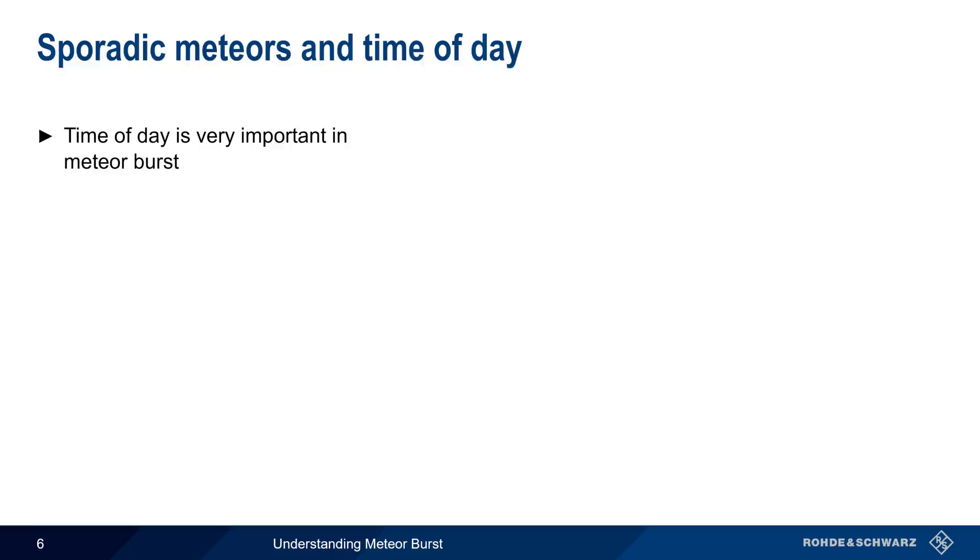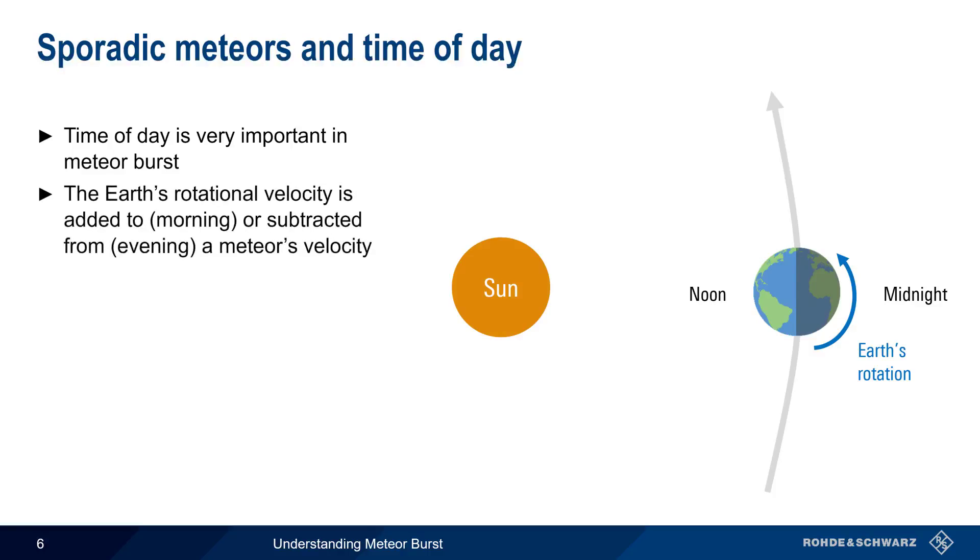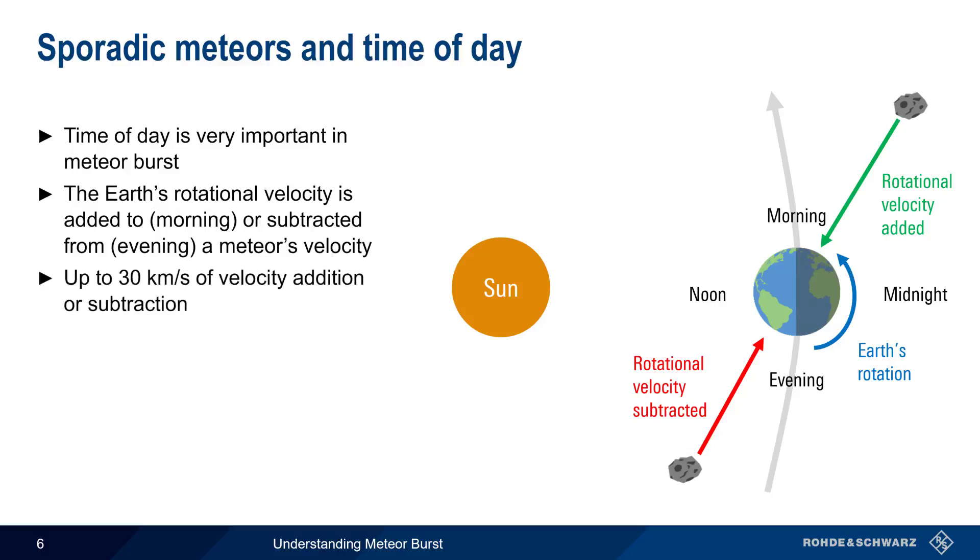Time of day, on the other hand, plays a very important role when it comes to sporadic meteors. As the Earth travels around the Sun, it also rotates on its axis. This rotational velocity is added to, or subtracted from, meteors that the Earth comes in contact with. In the morning, meteors hit the Earth head-on, and the Earth's rotational velocity is added to the meteor's velocity. In the evening, meteors are catching up from behind, and thus the Earth's rotational velocity is subtracted from the meteor's velocity. This added or subtracted velocity can be up to 30 km per second, which is quite substantial given that most meteors have velocities of tens of kilometers per second.